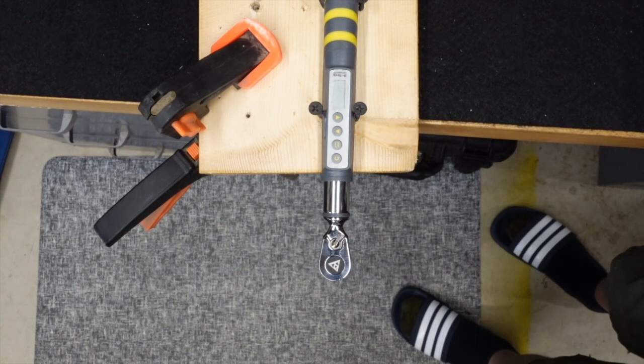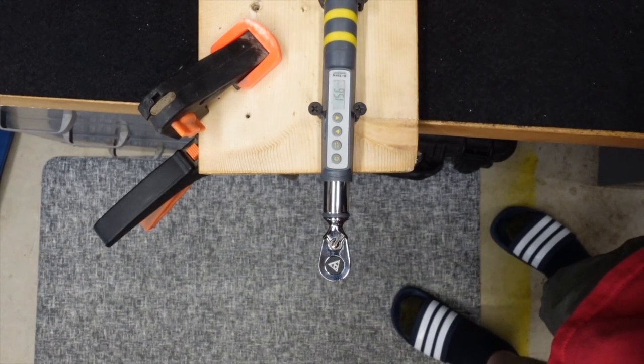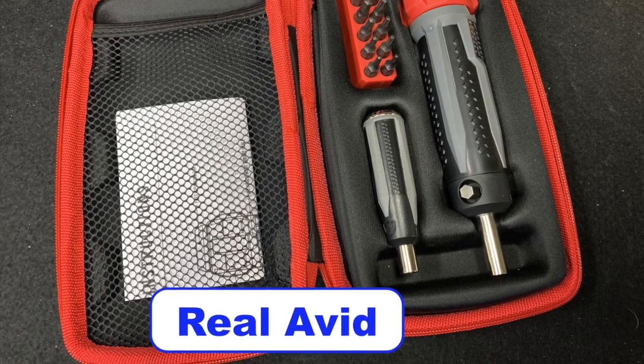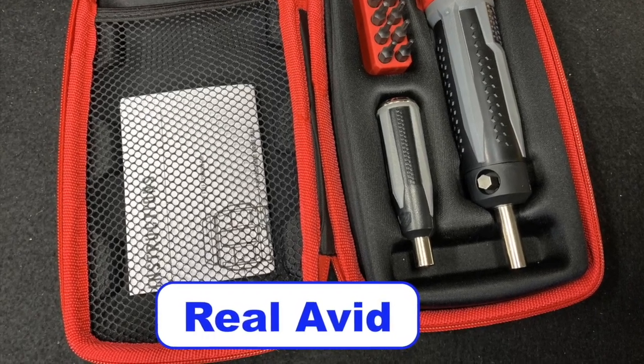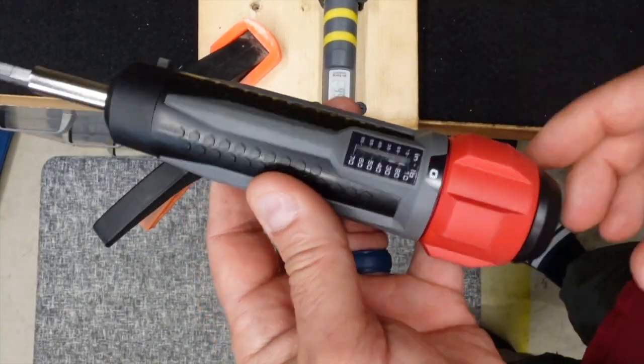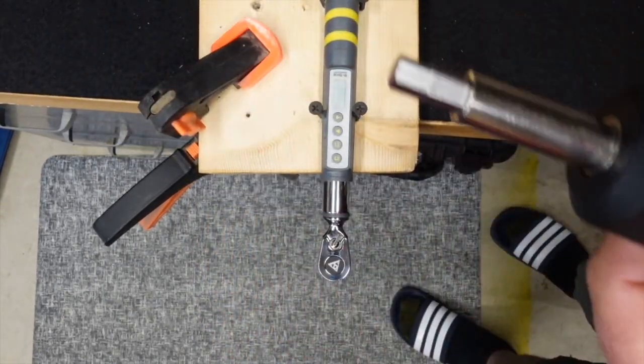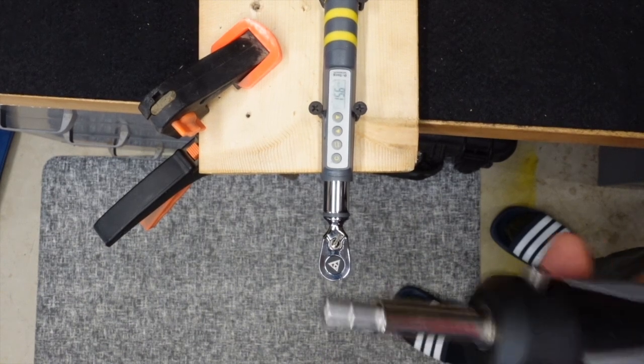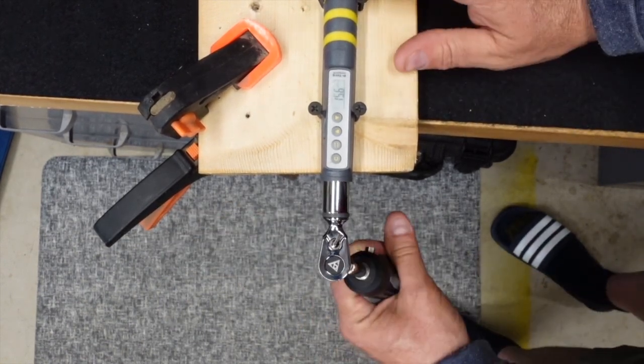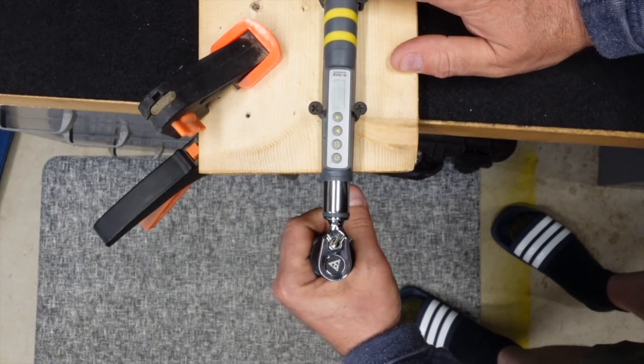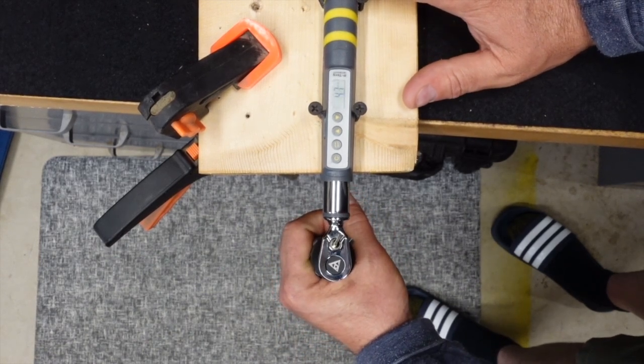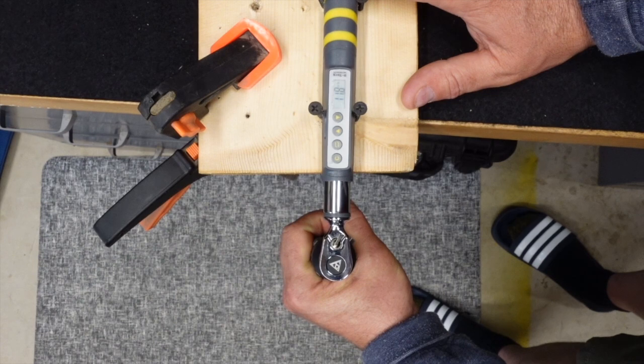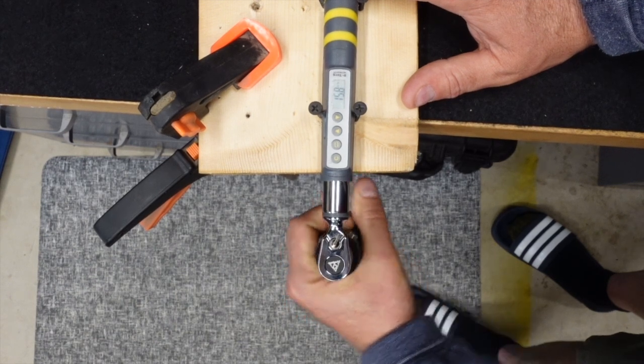What do I got next? Let's try the Real Avid. There is the Real Avid. I am going to put it on what should be 15. I'm going to do the same thing I did with the CDI and the others.